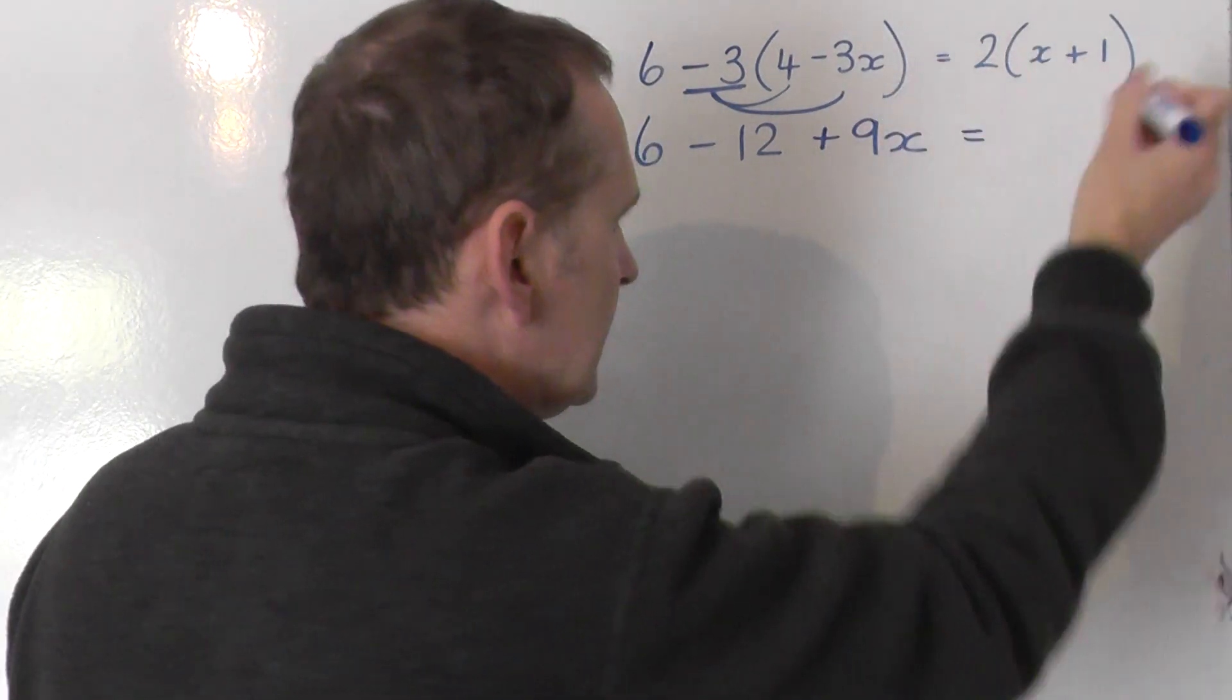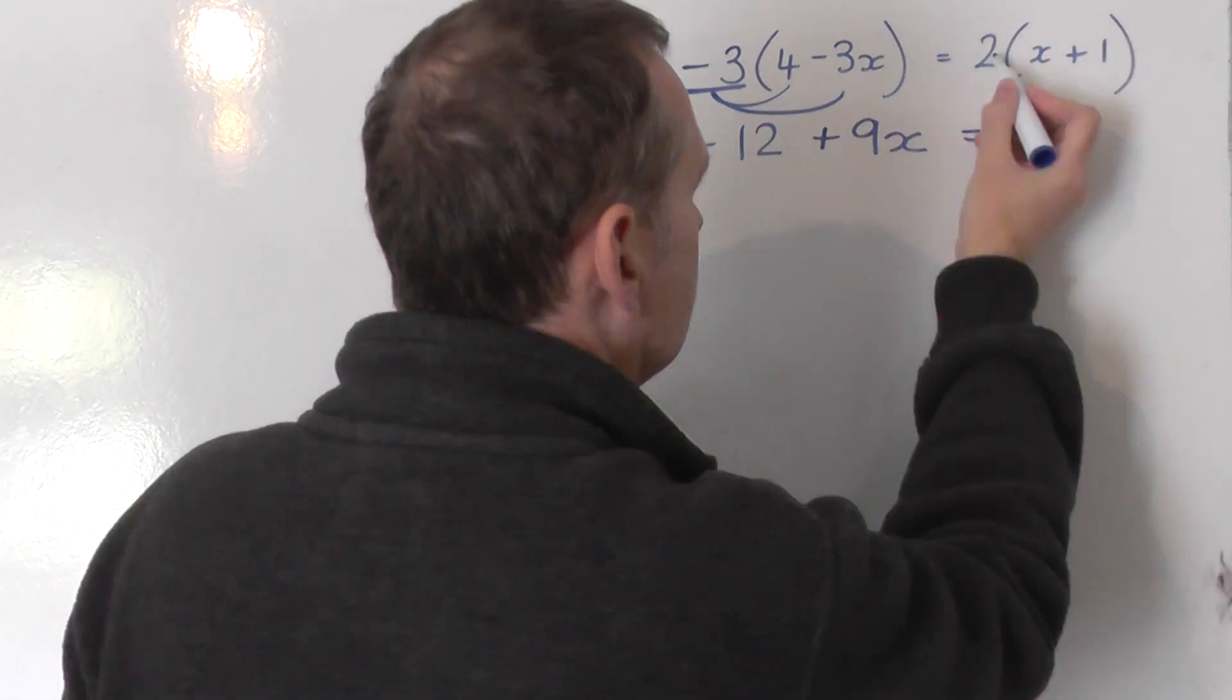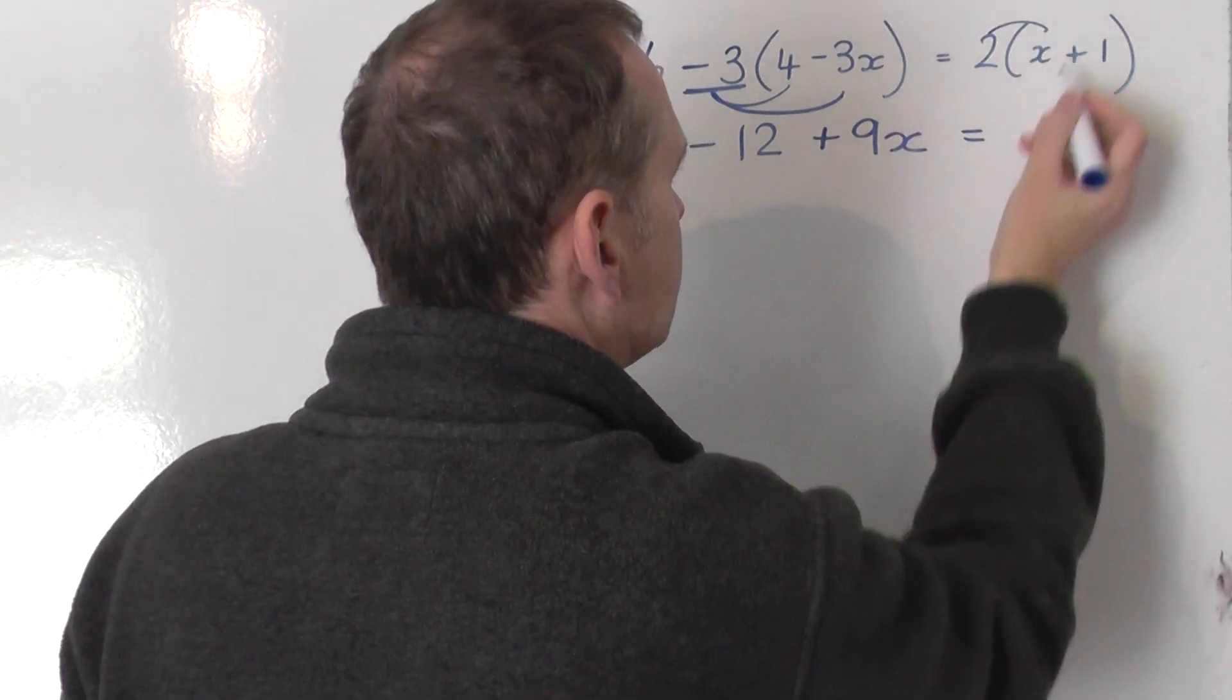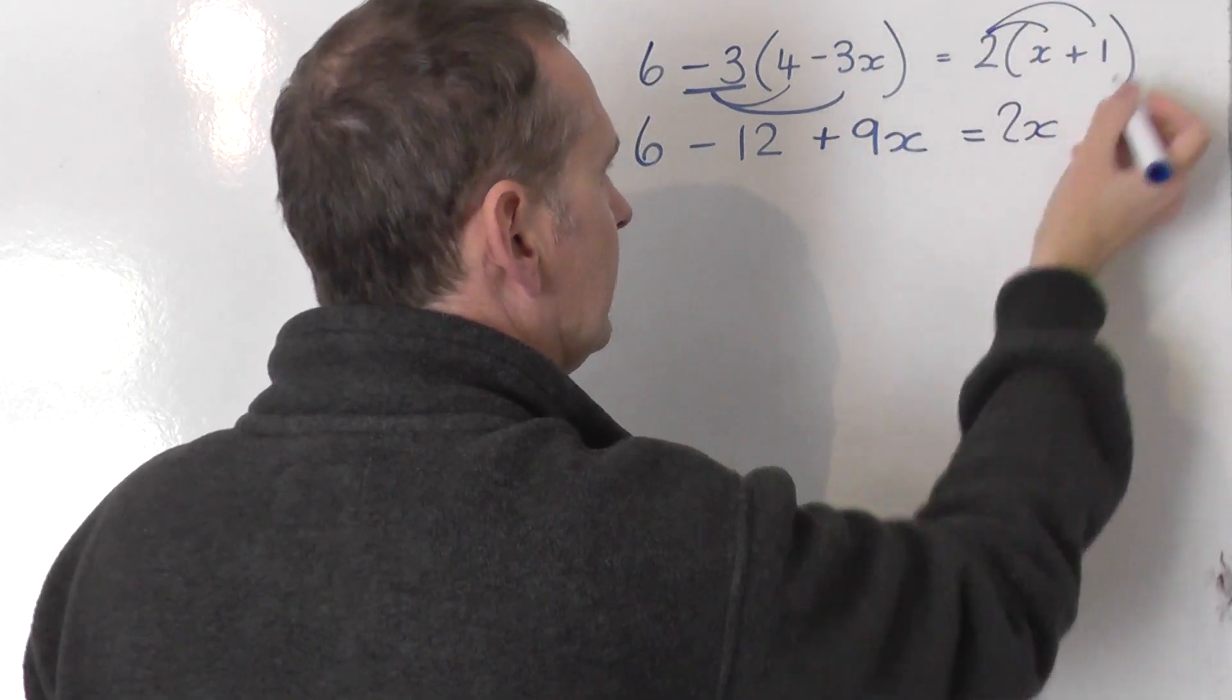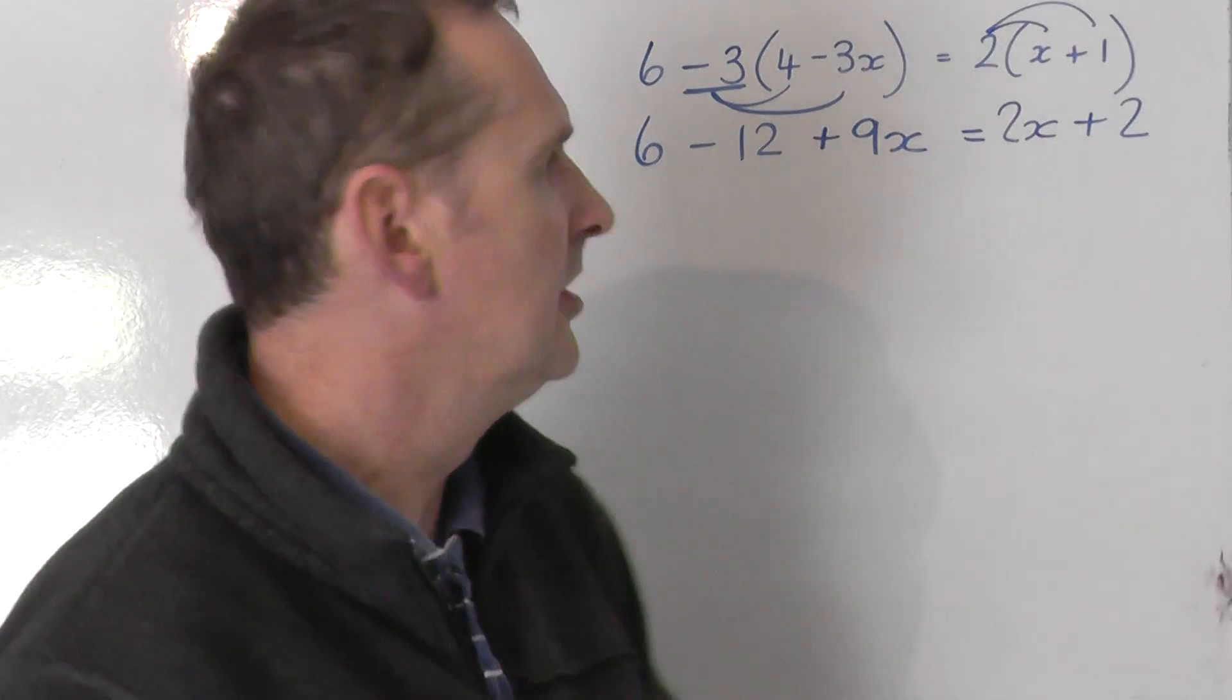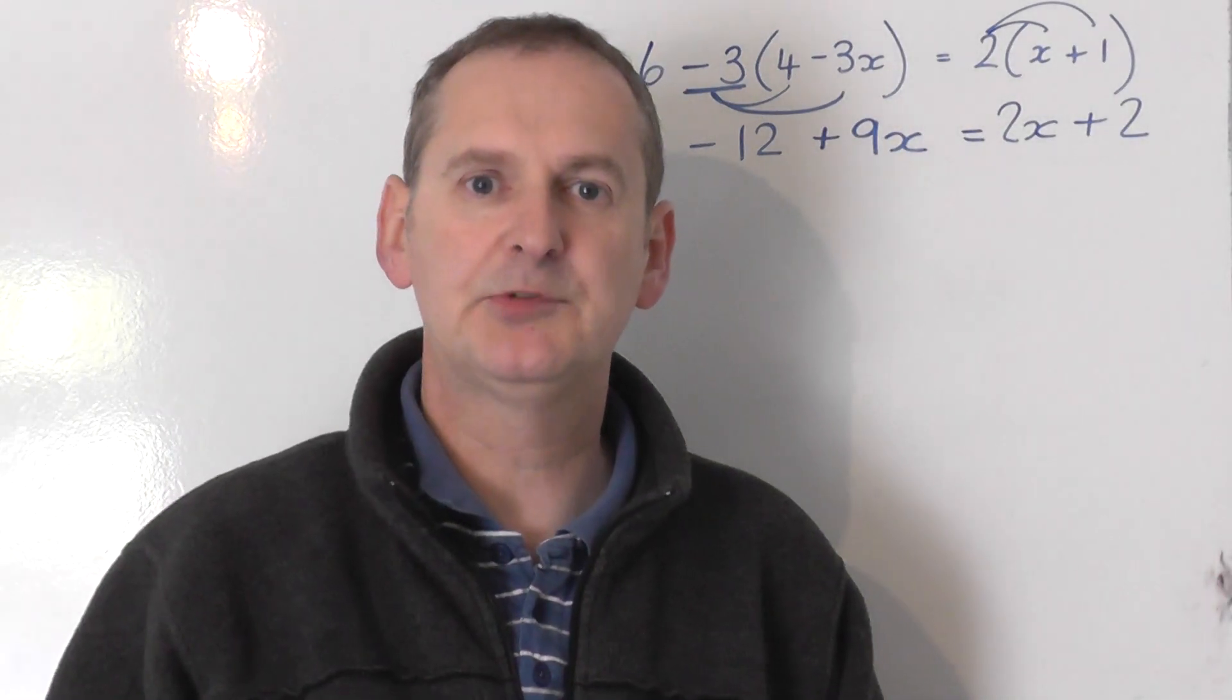Equals. The right hand side also needs expanding out. So you've just got 2 lots of the bracket. So it's 2 times x is 2x and then 2 times positive 1 is positive 2. So I've now eliminated both brackets.